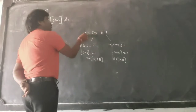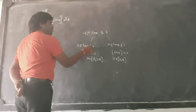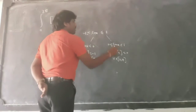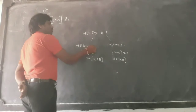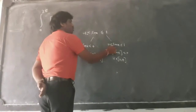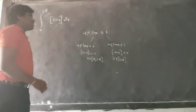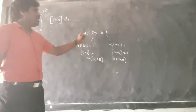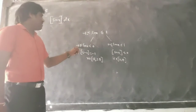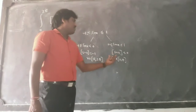So sin x lies between -1 and 1. This range can be divided into two parts: -1 to 0, and 0 to 1. When sin x is in the interval -1 to 0, the greatest integer function gives -1. When sin x is in the interval 0 to 1, the greatest integer function gives 0.